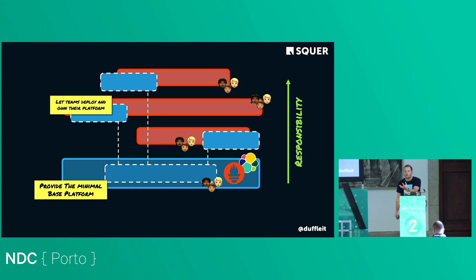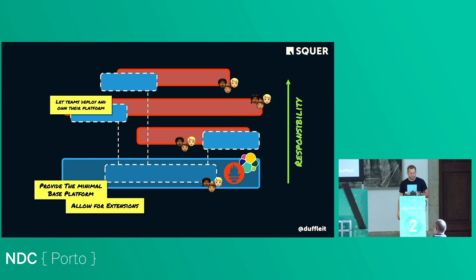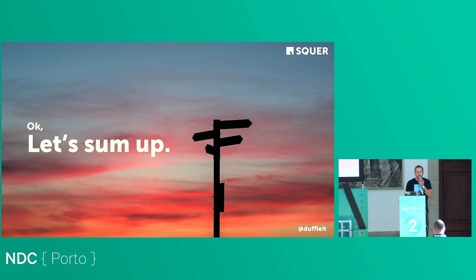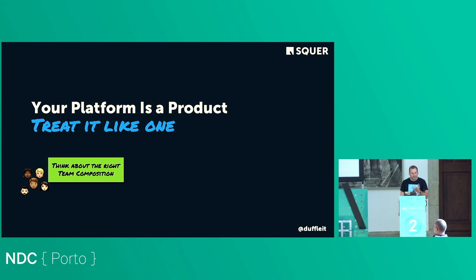That's the key message: provide a minimal useful base platform. We operate Kubernetes and Elasticsearch for you, but we give you a platform you can deploy on and operate on your own. Platform teams are not operations. That's why we have site reliability engineers — an enabling team whose goal is to help teams achieve 'you build it, you run it' — and whose main goal is eventually to become obsolete.